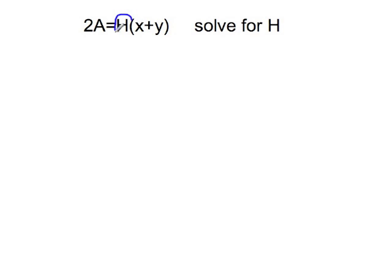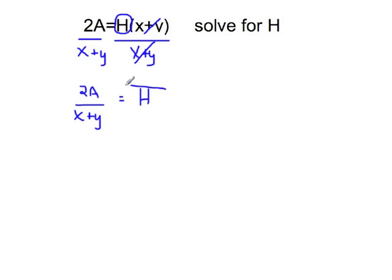Same equation. This time we want to solve for H. H is located outside of the parentheses. There's no reason to distribute. Think about this as H times the quantity. So to undo multiplying, you want to divide by the quantity X plus Y on both sides. On the right side, X plus Y divided by X plus Y just cancels out, and we have H alone, which is what we want. On the left side, there's nothing I can do with this. So I'm left with the expression 2A over X plus Y. And that is the equation solved for H.